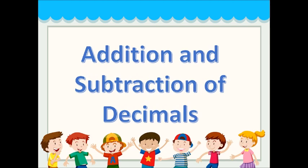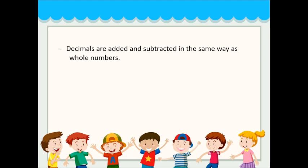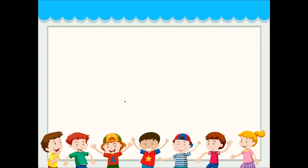First is addition and subtraction of decimals. Decimals are added and subtracted in the same way as whole numbers. When two decimals are added together or subtracted, the decimal point must be vertically aligned and the digits must be written in the correct value columns.